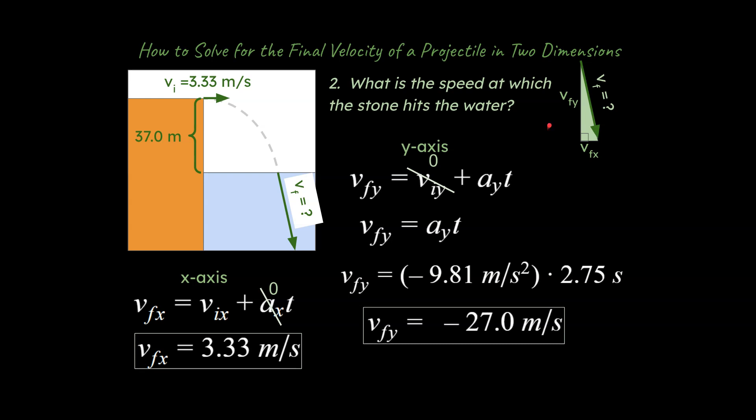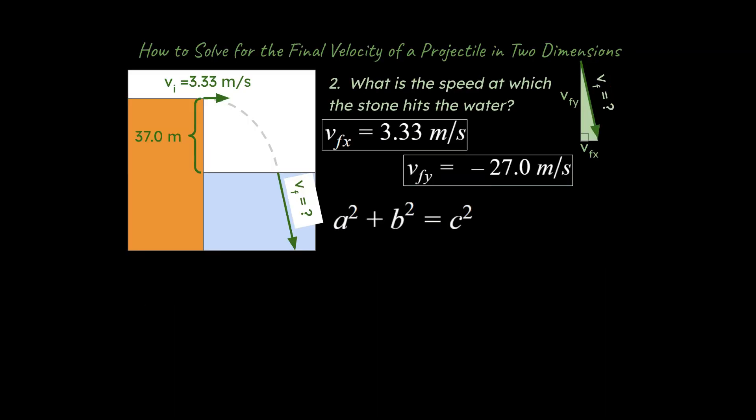Now I want to ask you, all right, if we know our v final in the y, and we know our v final in the x, how could I solve for the hypotenuse of a right triangle here? What do you think? Well, hopefully you can come up with the idea that we're going to use the Pythagorean theorem here, and so that is a squared plus b squared is equal to c squared, where a and b are the legs of the triangle over here and over here, and c represents the hypotenuse.